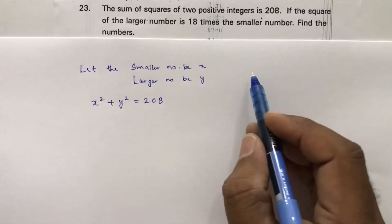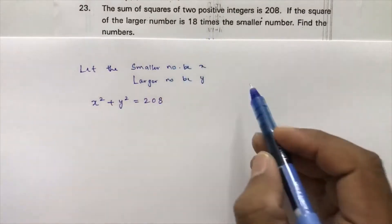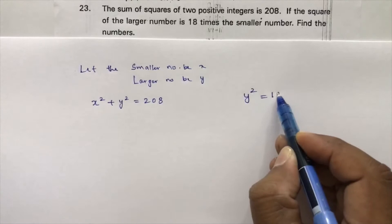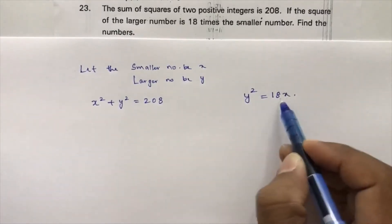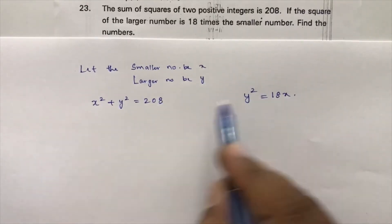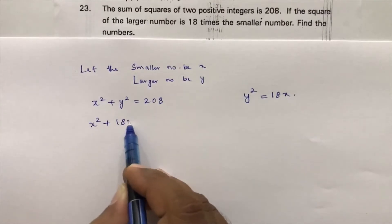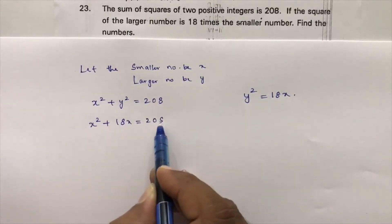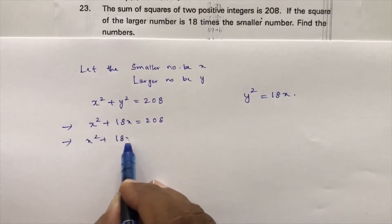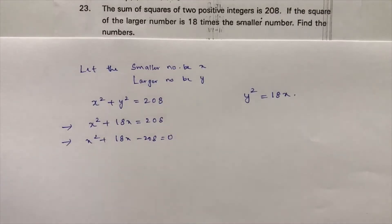The second condition is: the square of the larger is 18 times the smaller, so y squared equals 18x. Substituting this into the first equation gives x squared plus 18x equals 208, which simplifies to x squared plus 18x minus 208 equals 0.